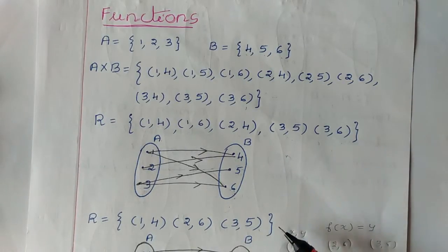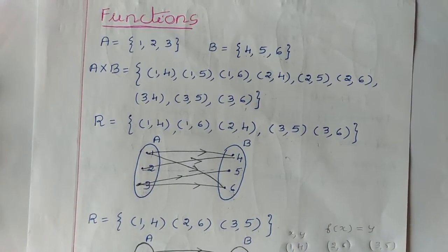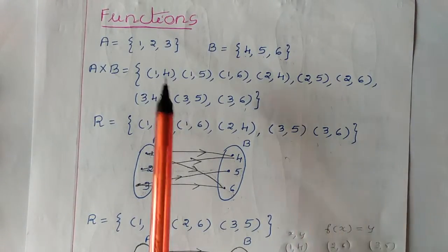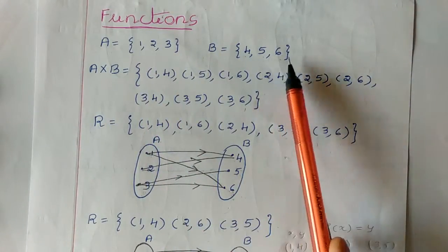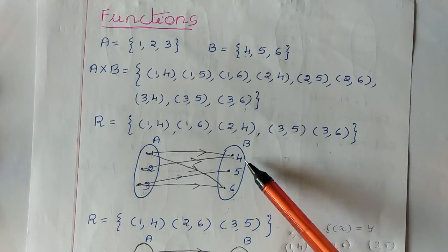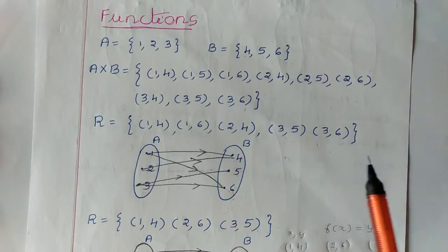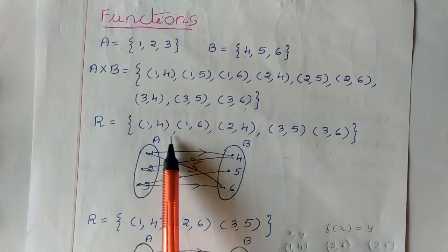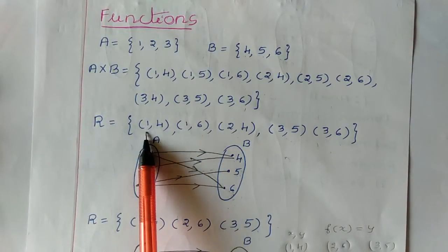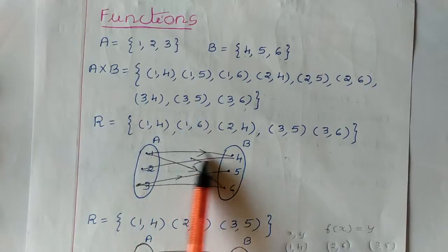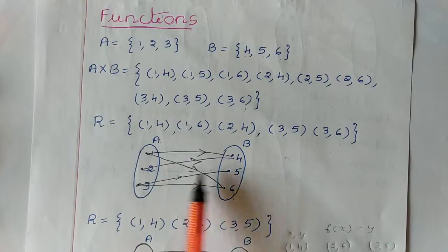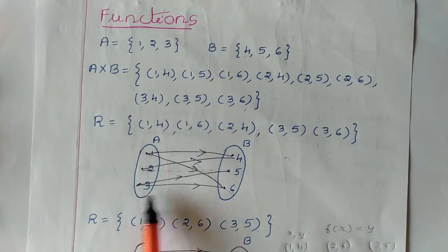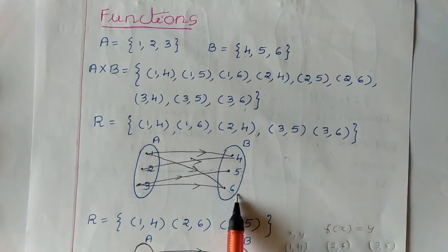Now for these two relations we will draw the arrow diagram. The arrow diagram can be drawn by using the set elements. In set A we have 1, 2, 3 and in set B we have 4, 5, 6. For the first relation: 1 is pointing to 4, 1 is pointing to 6, 2 is mapping to 4, 3 is mapping to 5, and 3 is mapping to 6.